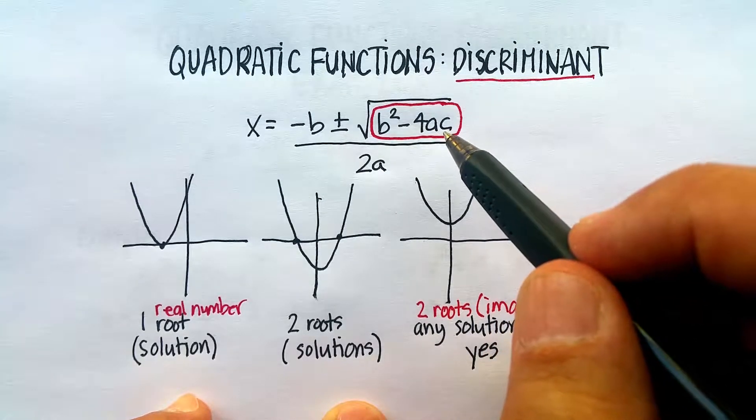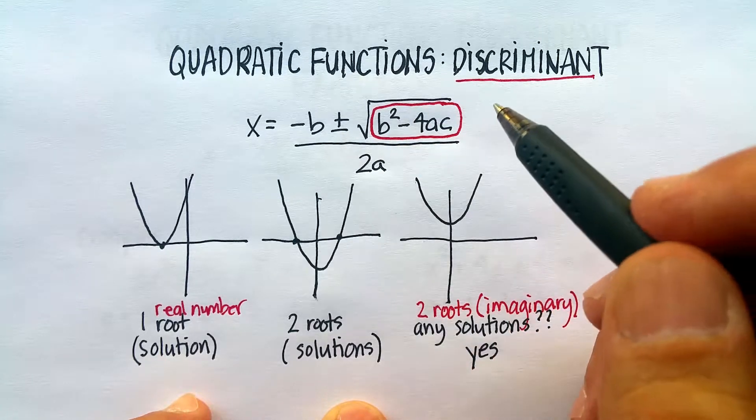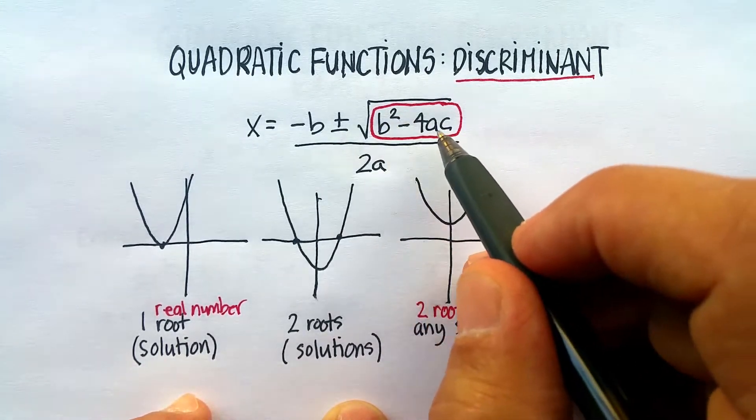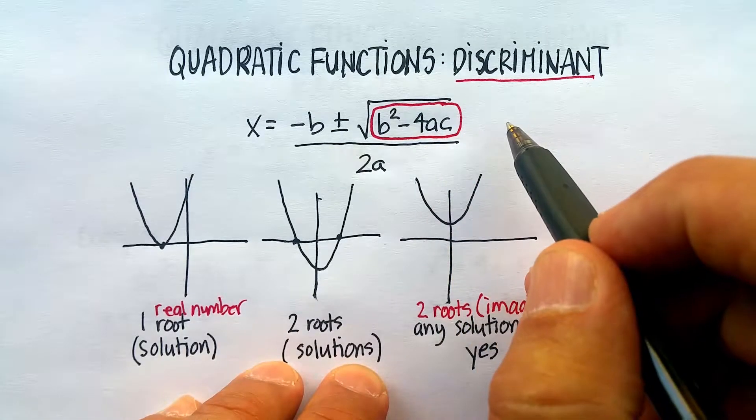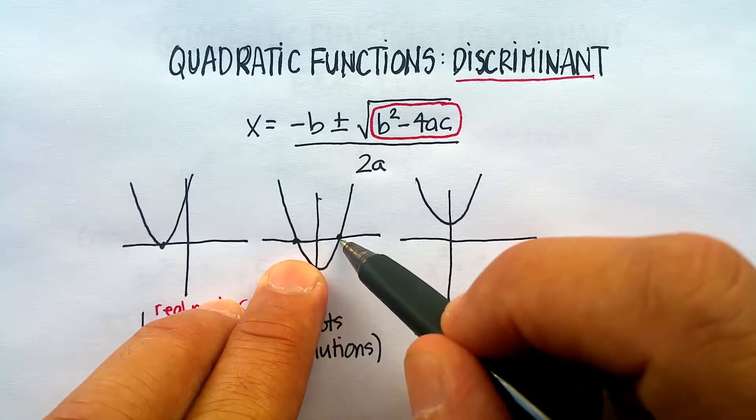that will tell you whether you have once, twice, or not at all. How does that work? Remember that if b squared minus 4ac, if you do a quick calculation, is greater than zero, then you're going to have two real roots.